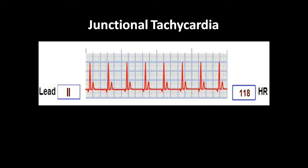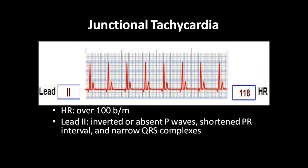Because the rhythm is generated by the junction, the P waves will be inverted and the heart rate will go above 100 beats per minute. If the rate is less than 100 beats per minute, we call it accelerated junctional rhythm. When it is more than 100 beats per minute, we call it Junctional Tachycardia.